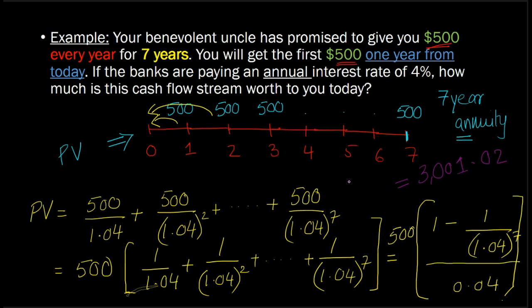So basically your uncle is saying he's going to give you $500 every year for the next seven years, starting one year from today. From your perspective, it is as if your uncle is giving you $3,001 today. If you had this sum, you would be as well off as getting a series of $500s over the next seven years.